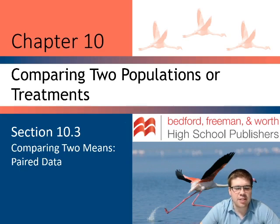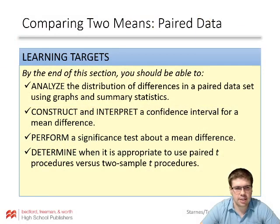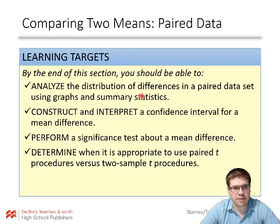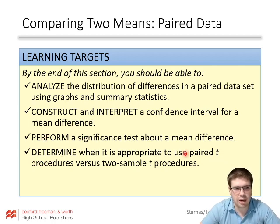Hey, EP Statistics, welcome to section 10.3: Comparing Two Means – Paired Data. In this section we're going to learn our last two standard inference procedures. By the end of the section you should be able to analyze the distribution of differences in a paired data set using graphs and summary statistics, construct and interpret a confidence interval for a mean difference, perform a significance test about a mean difference, and determine when it is appropriate to use paired T procedures versus two-sample T procedures.